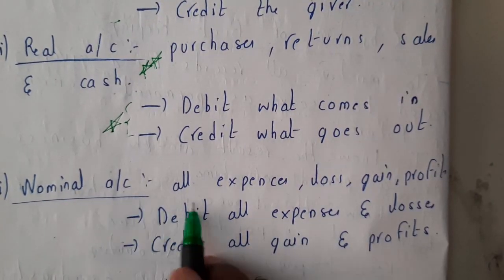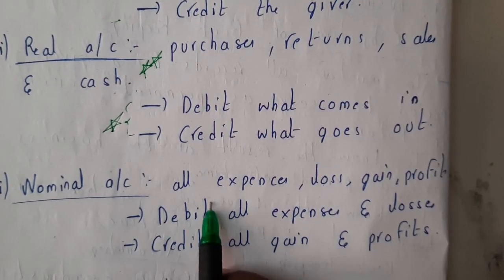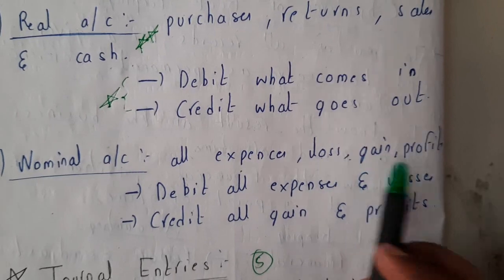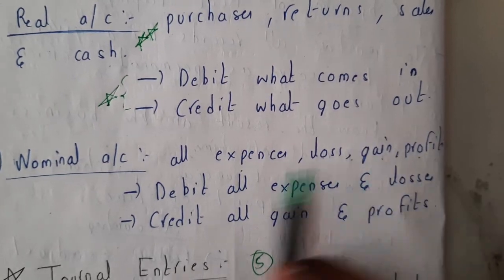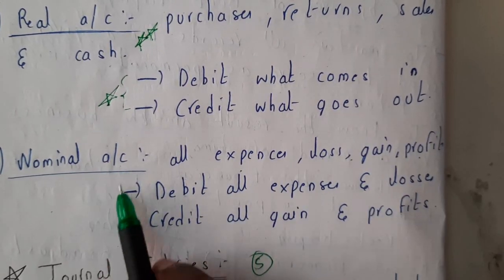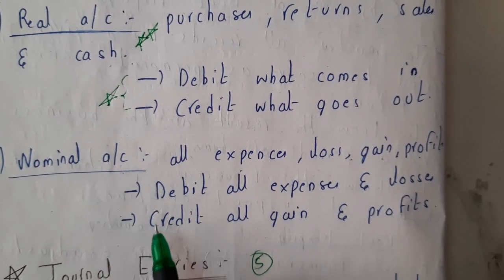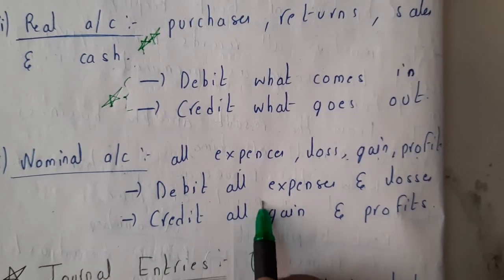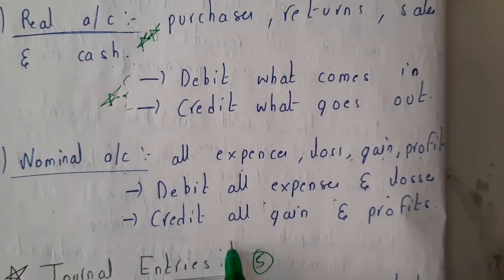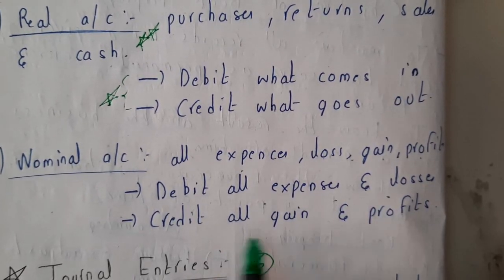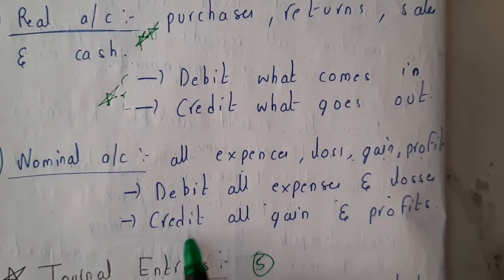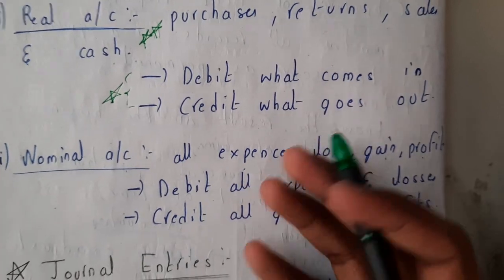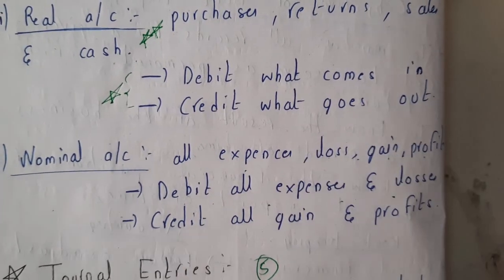The third type is the nominal account. A nominal account stores all expenses, losses, gains, and profits. The formula is: debit all expenses and losses, and credit all gains and profits. These are the three types of accounts.